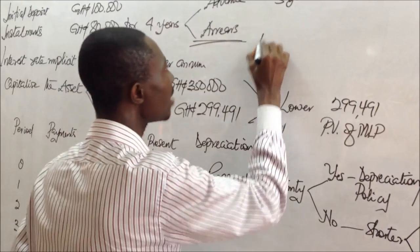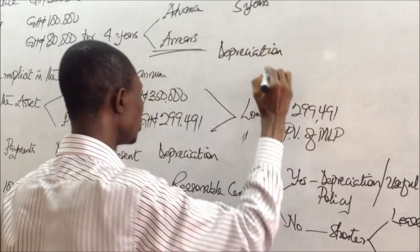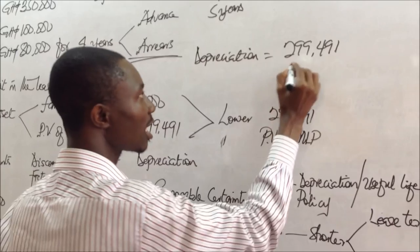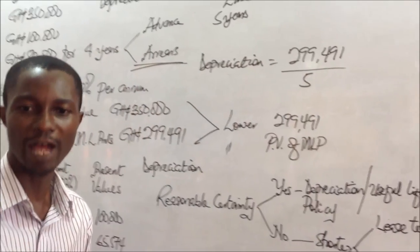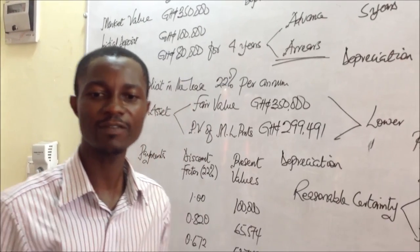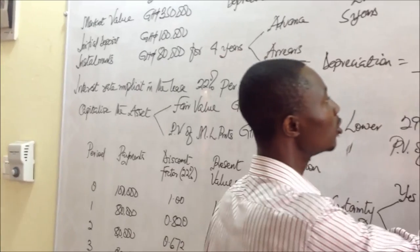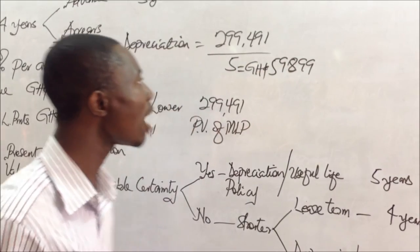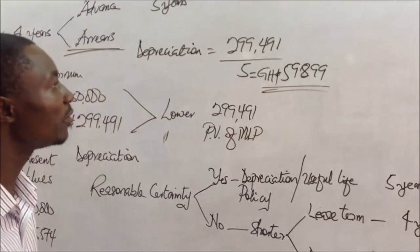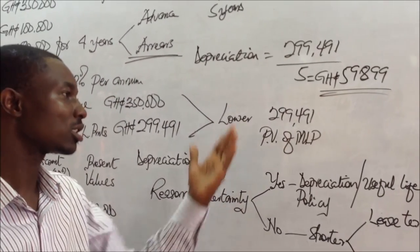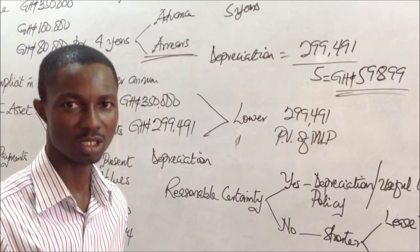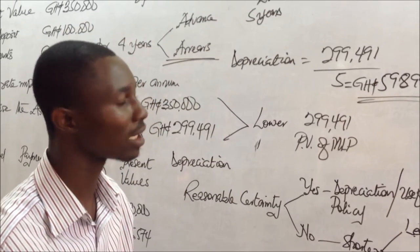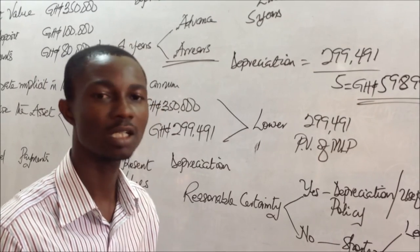If that is the case, my annual depreciation will be equal to $299,491 — the capitalized cost — divided by five years, giving us $59,899 per year. Depreciation is a P&L item, so it will be written off to the P&L account. The accumulated depreciation will be deducted from the cost of the asset, which is $299,491, on the statement of financial position.